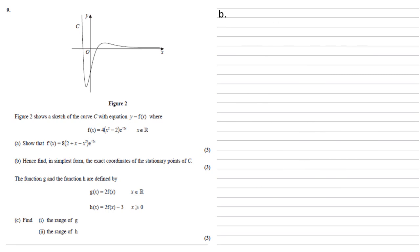Part b, hence find in simplest form the exact coordinates of the stationary points of C. The question says hence, so we're going to use part a, where we worked out that f dash x equals 8 lots of 2 plus x minus x squared e to the minus 2x.